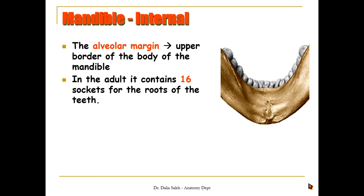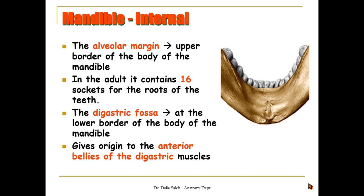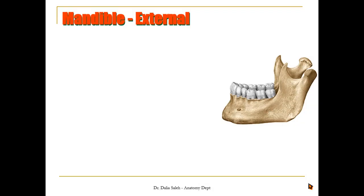Above, we have the alveolar margin, which represents the upper border of the body of the mandible. In the adult, it contains 16 sockets for the roots of the teeth. At the lower border of the body of the mandible, to the right and left of the midline, we have two depressions called the digastric fossae, which give origin to the anterior belly of the digastric muscles.